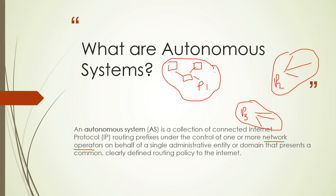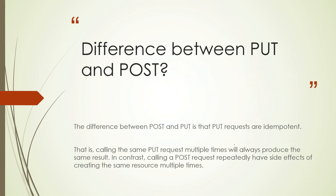Autonomous systems are connected through one special protocol known as BGP, which stands for Border Gateway Protocol. This is unique across all autonomous systems — there can only be one Border Gateway Protocol that all autonomous systems have to follow. Each autonomous system can support its own internal protocols, but for connection between all autonomous systems, Border Gateway Protocol must be used.